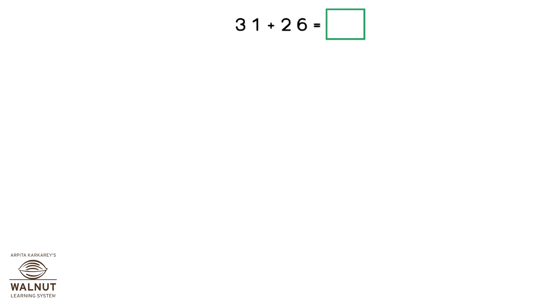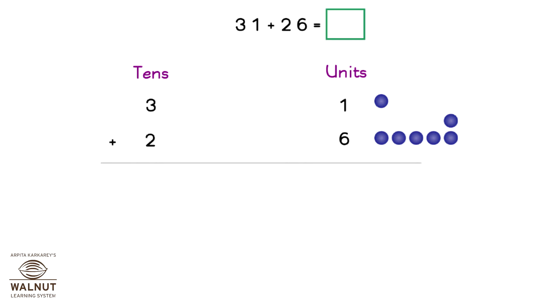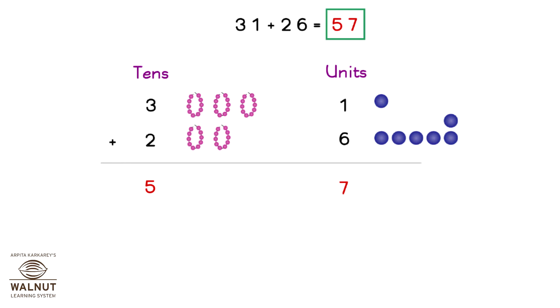Look at this problem: 31 plus 26. We will split both the numbers into tens and units. So for 31, we have three tens and one unit. For 26, we have two tens and six units. We add the units: one plus six is seven. We add the tens: three plus two is five. The number that we have is five tens and seven units, which is 57. That is the answer.